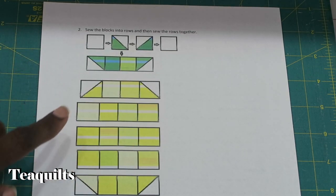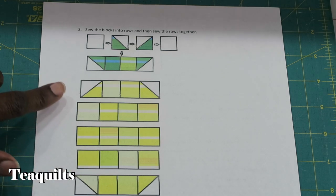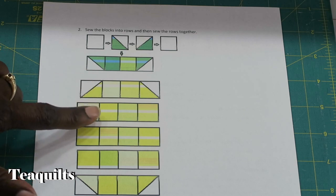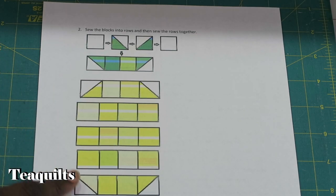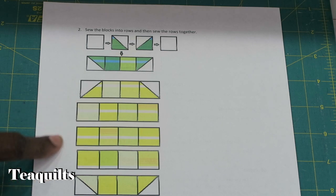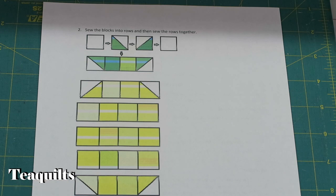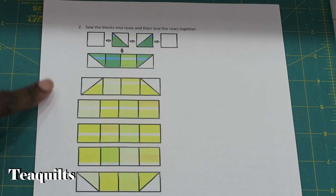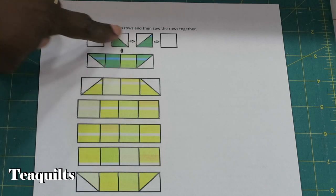My printer ink needed to be changed, but I wasn't going to reprint it just for this video. But you get the idea. I need five rows of four yellows, so what I did was I just went ahead and cut 20 yellow squares that are two and one-half inches.